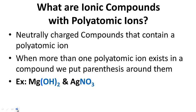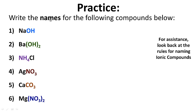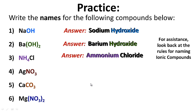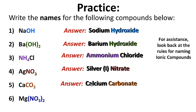For your notes: what are ionic compounds with polyatomic ions? Practice — write the names for the following compounds. The answers are: number one, sodium hydroxide; number two, barium hydroxide; number three, ammonium chloride; number four, silver(I) nitrate; number five, calcium carbonate; and number six, magnesium nitrate.